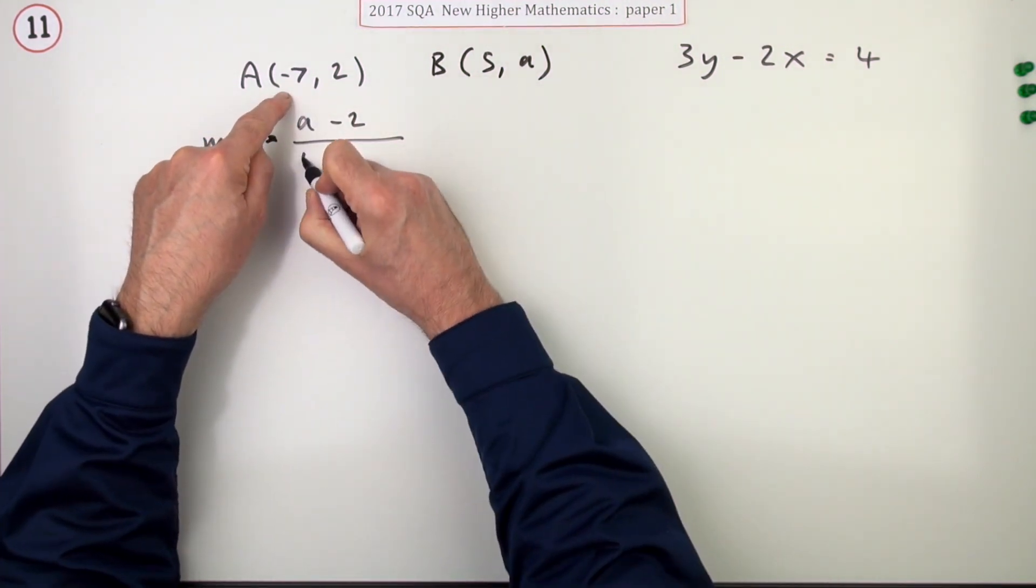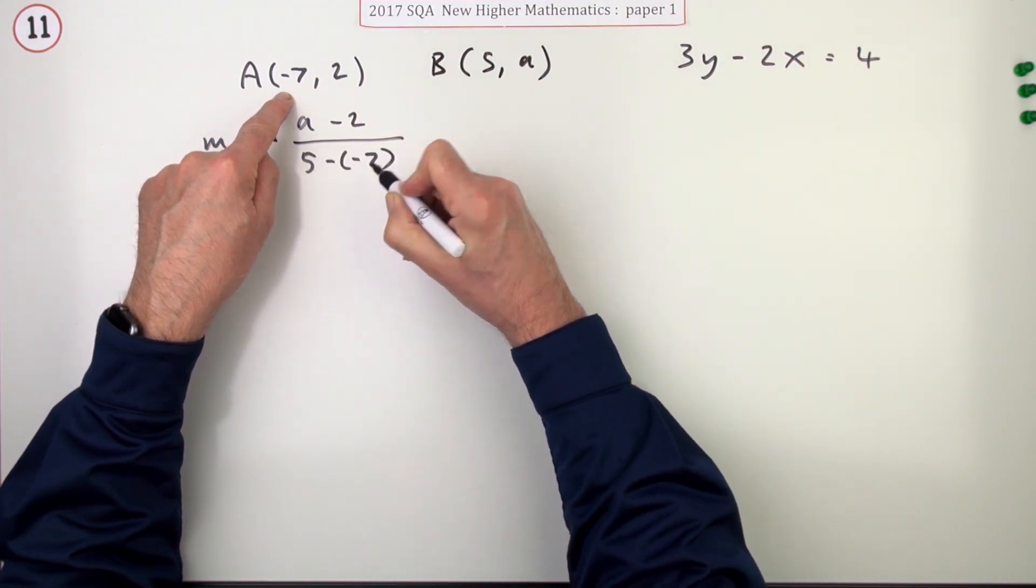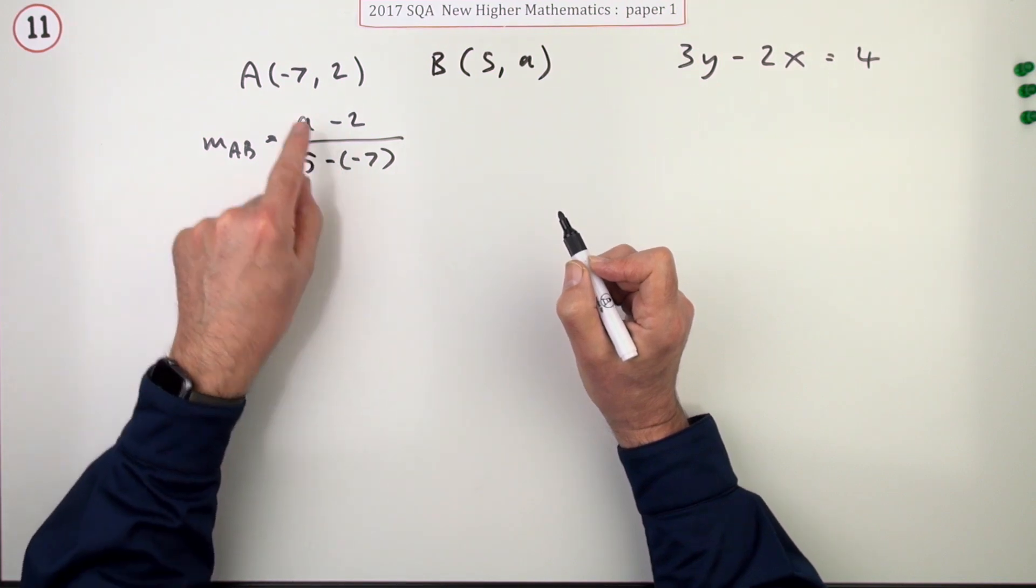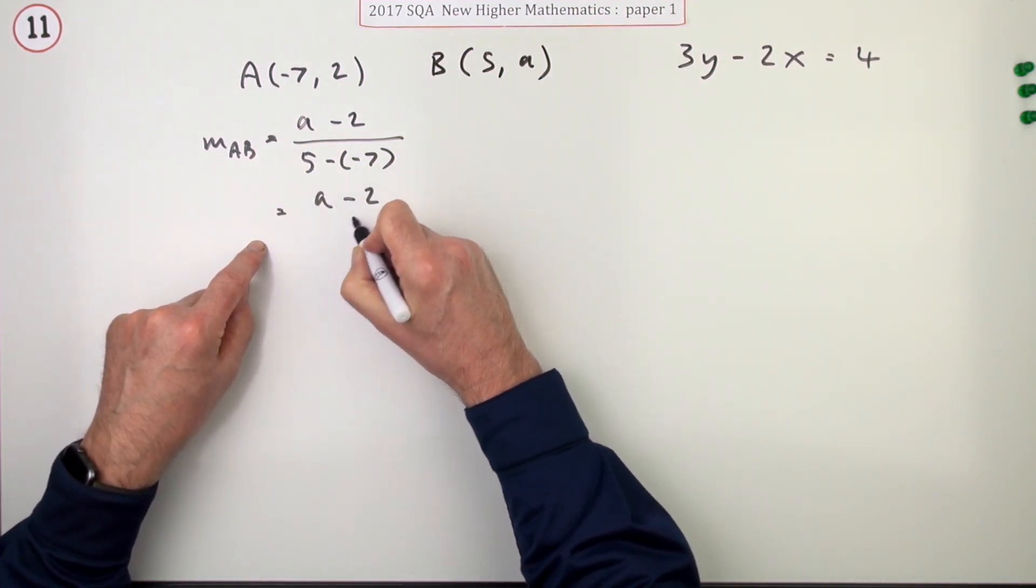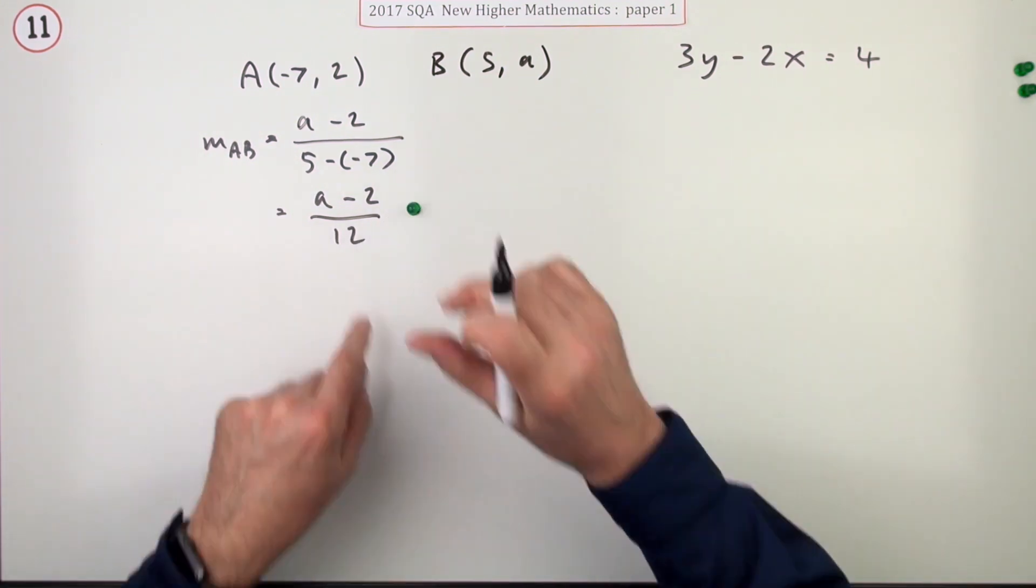over x2 minus x1, 5. I could leap in with B, but maybe I'll just be a bit more rigorous as they say and leave it as take away negative 7. So that leaves you with a minus 2 upon 12. Doing that gets you a mark.